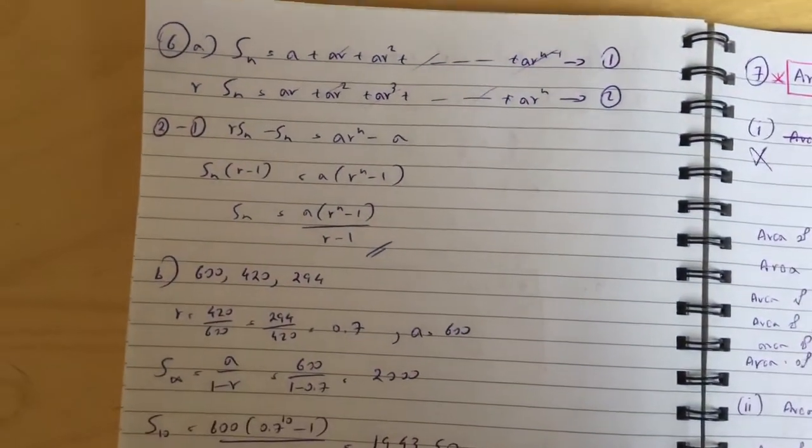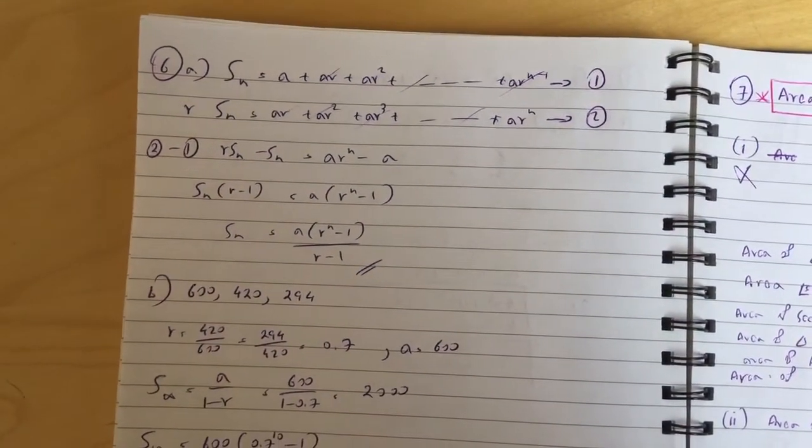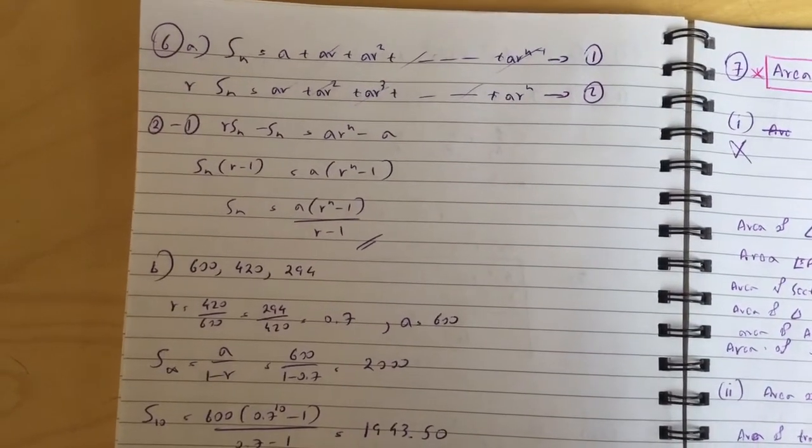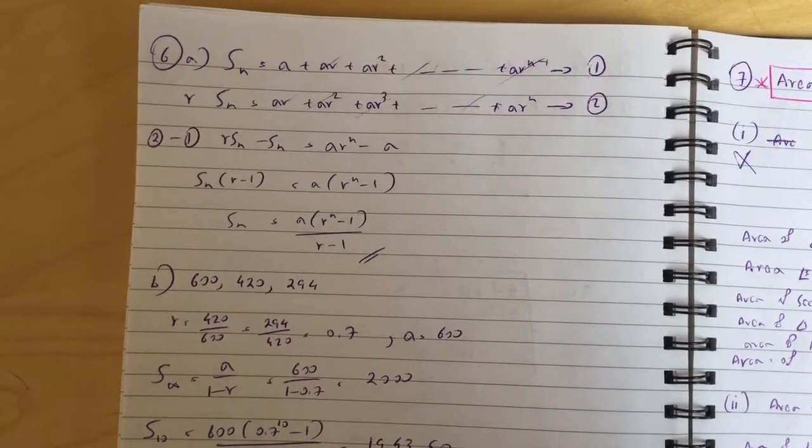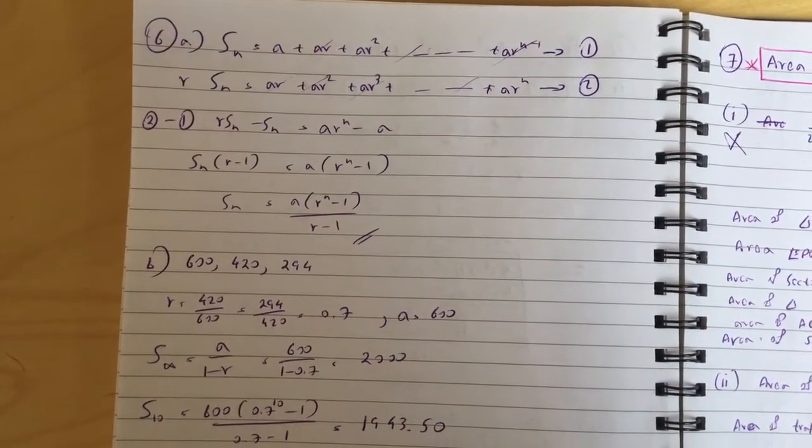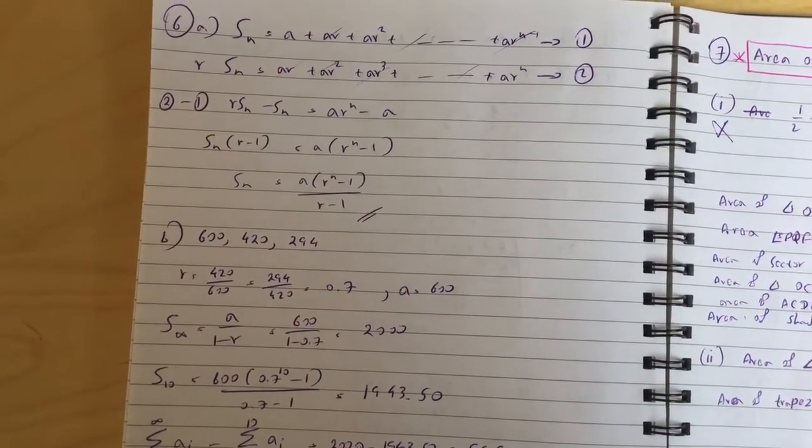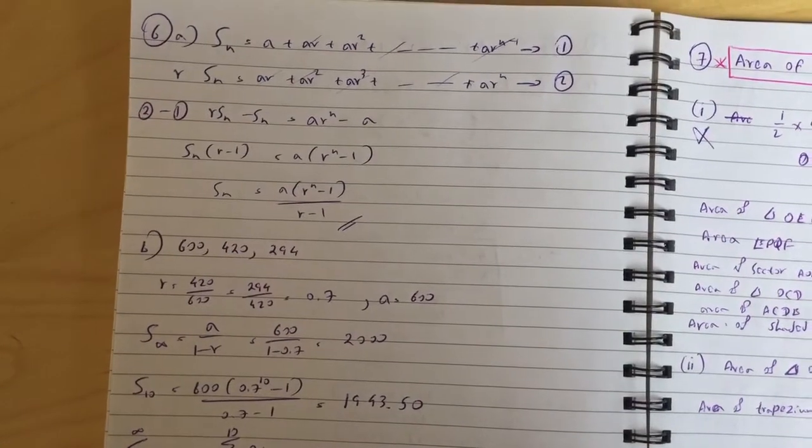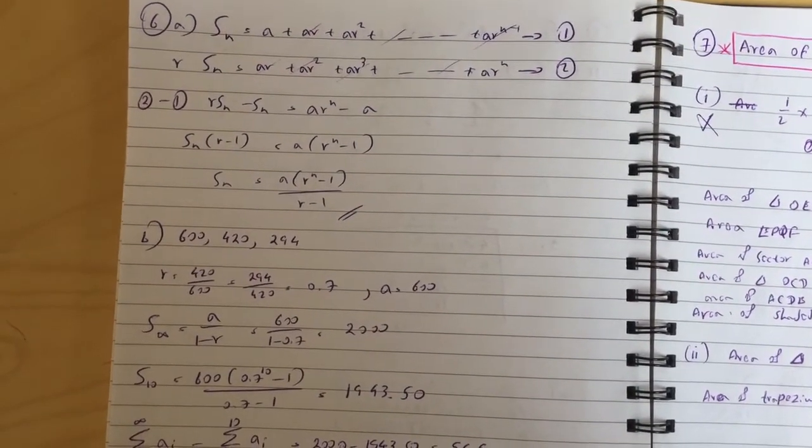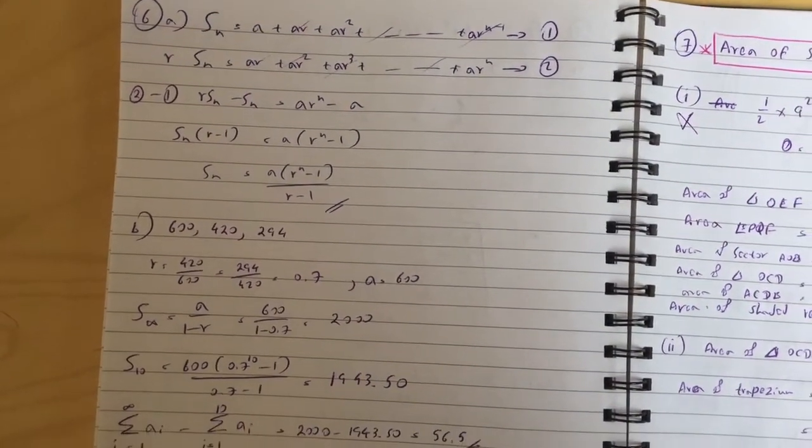Now question six. So the sum of a geometric sequence, Sn equals all that, and rSn is all that. You just multiply each term by r, and then I did 2 minus 1. You get rSn - Sn = a(r^n) - a. Factorize and divide, and you get the formula as required.